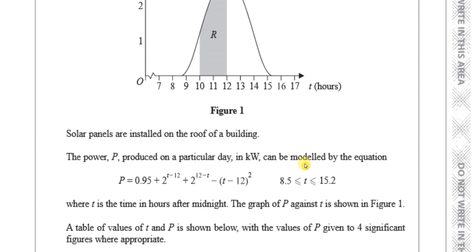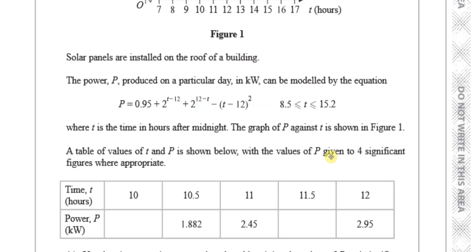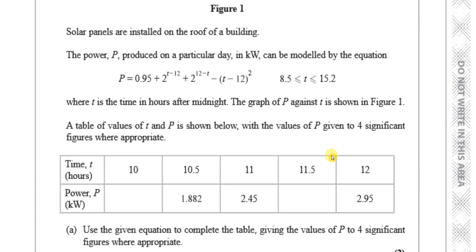Where t is between 8.5 and 15.2 and t is the time in hours after midnight. The graph of P against t is shown in figure one. A table of values of t and P is shown below. Use the given equation to complete the table, giving the values of P to four significant figures where appropriate. We need to find P when t equals 10 and when t equals 11.5.